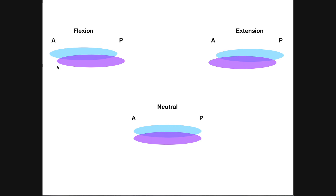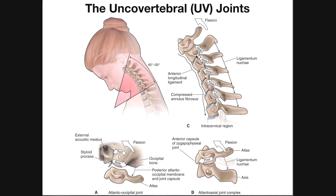It's not a huge movement — only a couple of millimeters, a very small movement. But since we have this movement all throughout the cervical spine for the most part, with the exception of the C1-C2 joint, it's going to increase the range of motion of the neck in both flexion and extension.